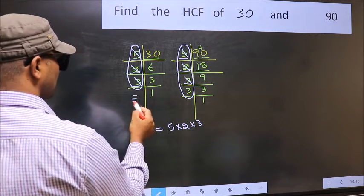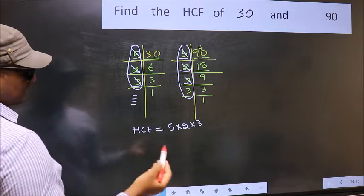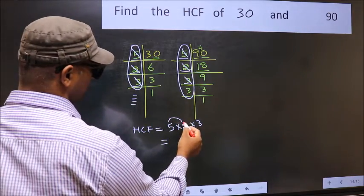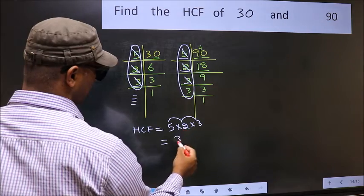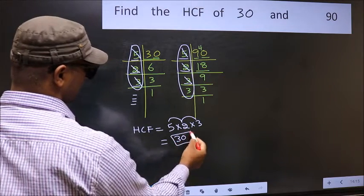No more numbers have been left out. So our HCF is 5 times 2, 10 times 3, 30 is our HCF.